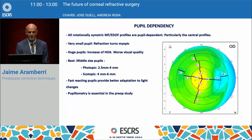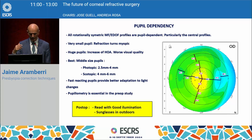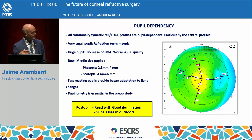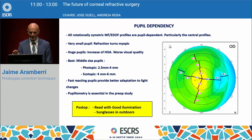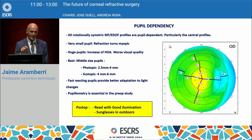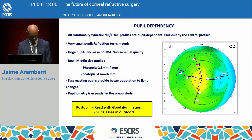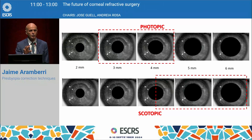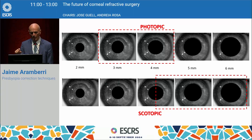Pupillometry is essential in the pre-op study. Two tips for the patients: they should be advised to read with good illumination — this improves results, seems quite obvious but is a very valuable piece of advice. And use sunglasses outdoors, because with this you will increase a little bit the pupil diameter so refraction is not that myopic. This is the sweet zone — what we want when reviewing pupillometry pre-op for photopic and scotopic pupils.